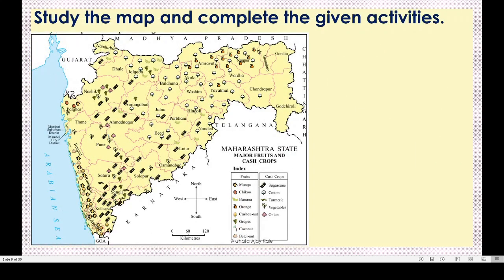Next, study the map and complete the given activities. This is the map of Maharashtra state showing major fruits and cash crops. You can see in the index: mango, chiku, banana, orange, cashew nut, grapes, coconut, and bitternut. These are fruits, and cash crops like sugarcane, cotton, turmeric, vegetables, and onions. By observing the map, we have to answer the given questions.